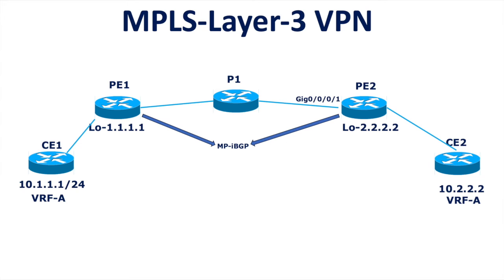Let's say in this topology you configure the MPBGP session between PE1 and PE2's physical interface IP address on GigabitEthernet 0/0/1, and you configure a Layer 3 VPN with VRF-A. You connect CE1 with IP 10.1.1.1/24 and on PE2 you connect CE2 with IP 10.2.2.2 under the same VRF-A. The question is whether the end-to-end ping between CE1 and CE2 will work or not.